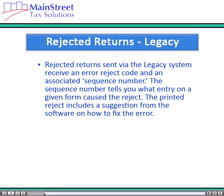Rejected returns sent via the legacy system receive an error reject code and an associated sequence number. The sequence number tells you what entry on a given form caused the reject. The printed reject includes a suggestion from the software on how to fix the error.